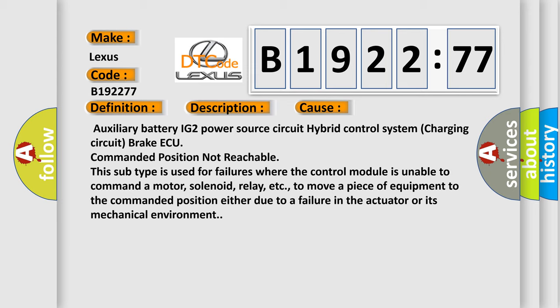Auxiliary battery IG2 power source circuit hybrid control system charging circuit brake ECU commanded position not reachable. This subtype is used for failures where the control module is unable to command a motor, solenoid, relay, etc., to move a piece of equipment to the commanded position either due to a failure in the actuator or its mechanical environment.